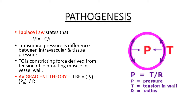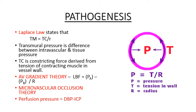The AV gradient theory describes local blood flow as the difference between arterial and venous pressure divided by the radius. The microvascular occlusion theory states that occlusion of small vessels or capillaries leads to further exudates, increasing permeability and decreasing overall blood flow. An important fact: perfusion pressure equals diastolic blood pressure minus intracompartmental pressure. If this pressure is less than 30 mmHg, it is indicative of impending compartment syndrome requiring surgical intervention.